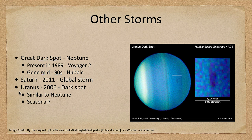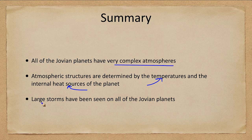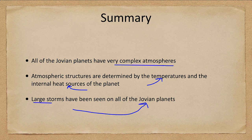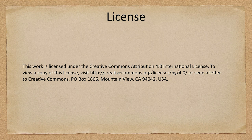In summary, the Jovian planets have complex atmospheres whose structures are determined by temperatures and internal heat sources. Large storms have been seen on every single one of the Jovian planets, not just the Great Red Spot on Jupiter but on the other planets as well. That concludes this lecture on atmospheres of the giant planets. We'll be back next time for another topic in astronomy — have a great day, everyone!